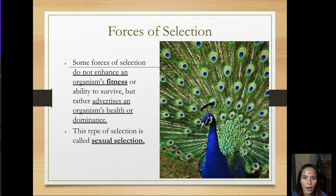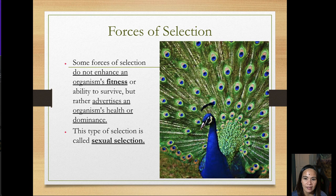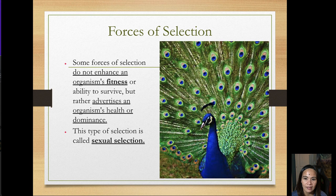Last but not least, some forces of selection do not enhance an organism's ability to survive but rather advertise an organism's health and dominance. This type of selection is called sexual selection — for example, the peacock shows off its beautiful feathers and design to attract a mate. I hope you've learned something about evolution and the forces that drive natural selection. If you have any questions, please let me know. Have a great day!